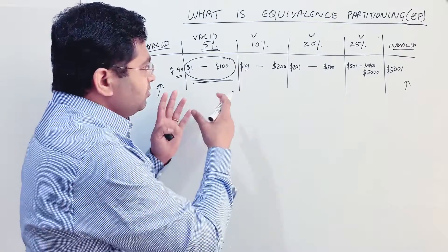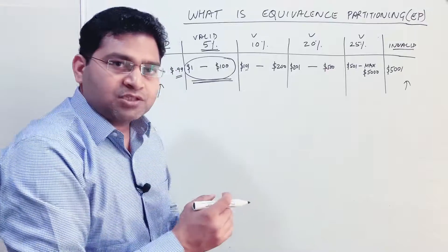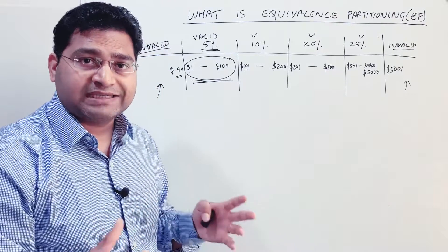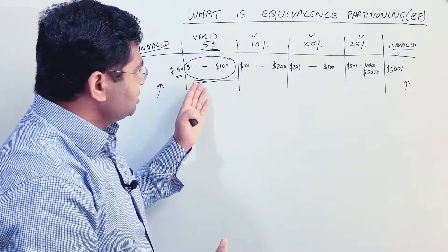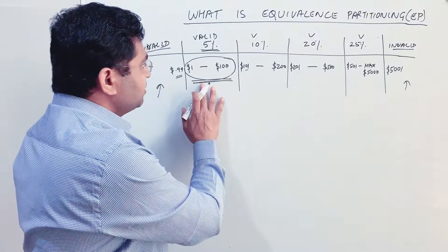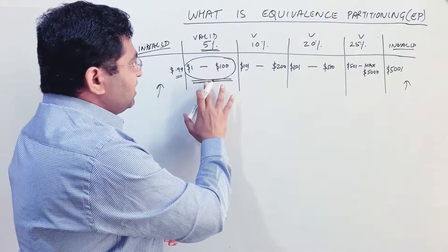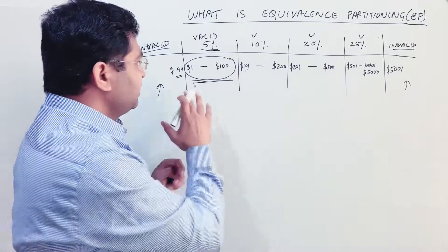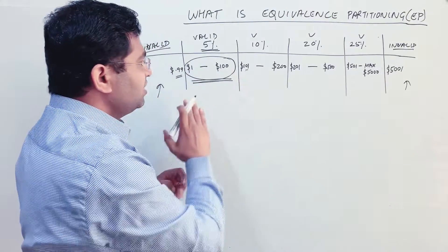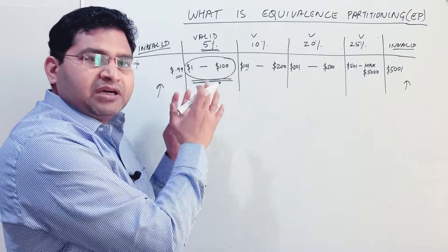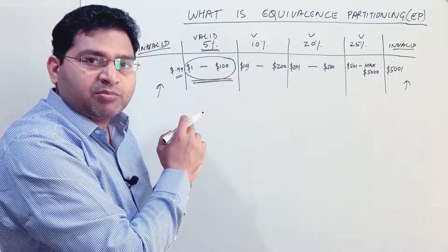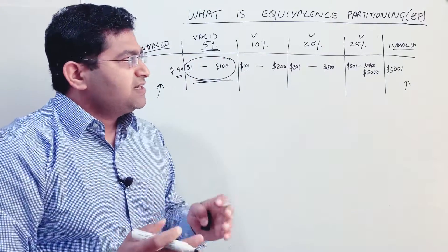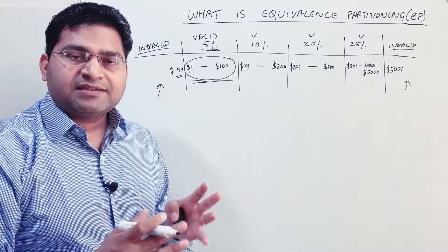Equivalence partitioning still gives you very broad test coverage because logically the software considers all values within a partition the same. It doesn't matter whether you put all 100 values or just pick higher, lower, and one or two middle values. Equivalence partitioning doesn't go alone — it goes together with boundary value analysis, which I'll cover in the next tutorial.